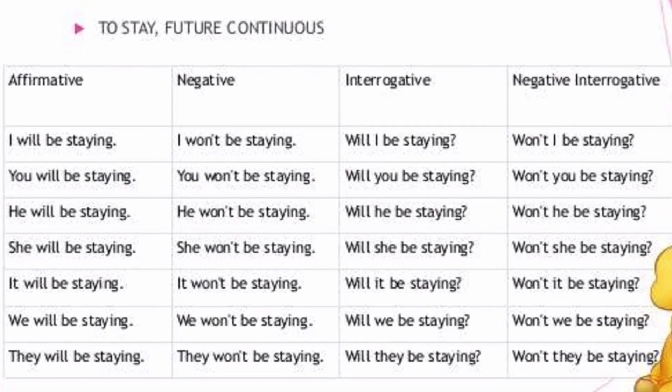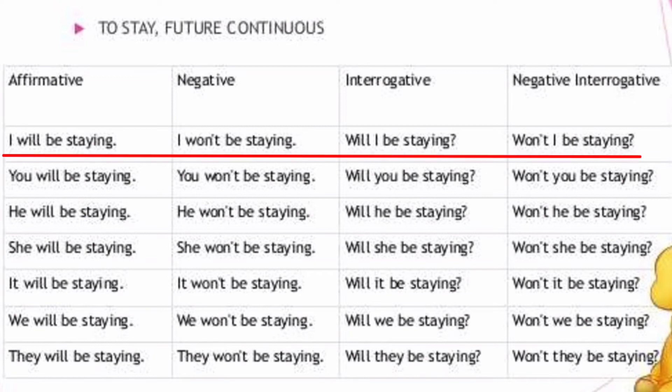Let us see how the future continuous tense is used in affirmative, negative, interrogative, and negative interrogative sentences. Affirmative: I will be staying. Negative: I won't be staying. Interrogative: Will I be staying? Here 'will' is the auxiliary verb — when we pose a question, we should place the auxiliary verb at the beginning. Negative interrogative: Won't I be staying? 'Won't' is the short form for 'will not'.